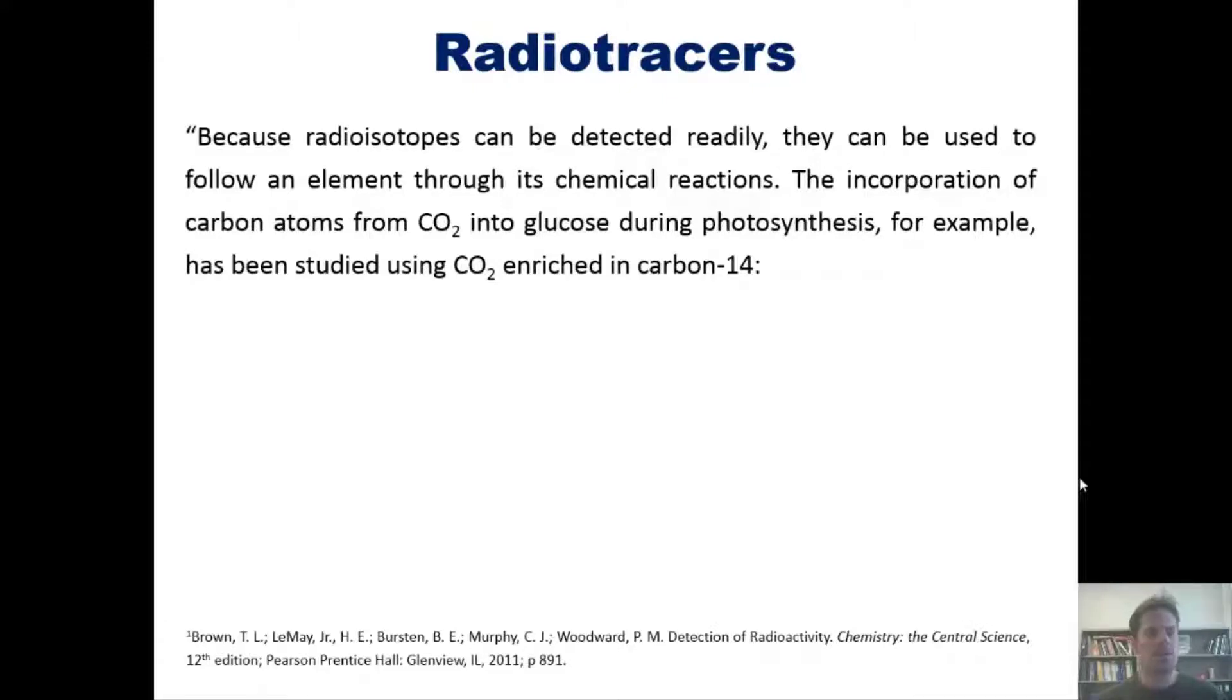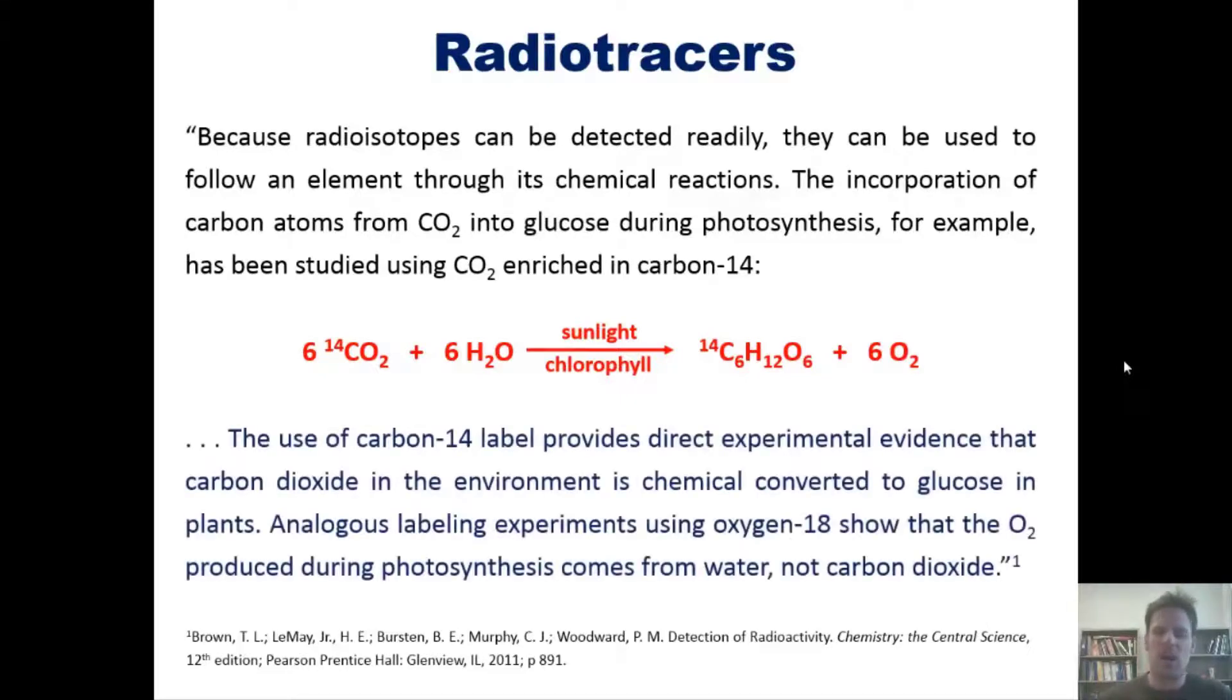Now, because radioisotopes can be detected readily, they can be used to follow an element through its chemical reactions. The incorporation of carbon atoms from CO2 into glucose during photosynthesis, for example, has been studied using CO2 that is enriched in carbon-14. In this equation, for example, you can see that if you have C14-labeled CO2 and you combine it with water in a plant that undergoes photosynthesis, it will produce C14-labeled glucose. That tells us then that the carbon atoms that are incorporated in a plant into glucose and the polymers that it makes therefrom arise from metabolizing CO2. And all this was able to be seen experimentally by labeling the CO2 with C14 instead of your typical C12. So the use of carbon-14 label provides direct experimental evidence that carbon dioxide in the environment is chemically converted to glucose in plants. Analogous labeling experiments using oxygen-18 showed that the O2 produced during photosynthesis comes from water and does not come from the carbon dioxide.